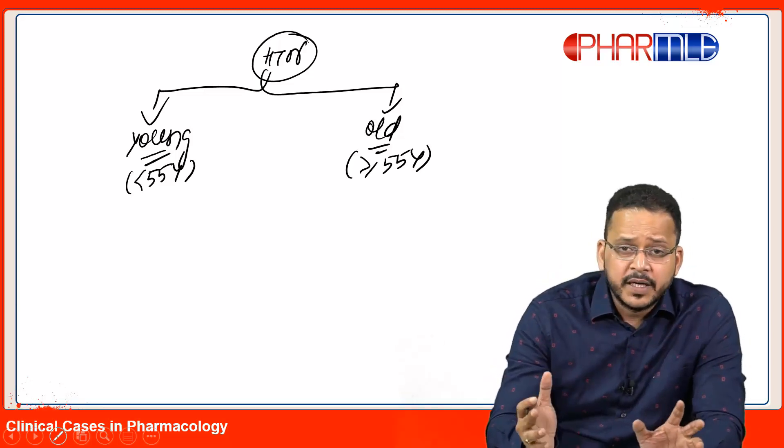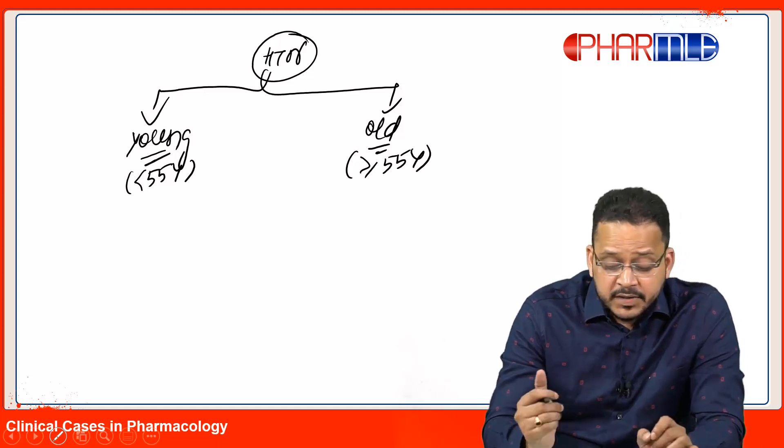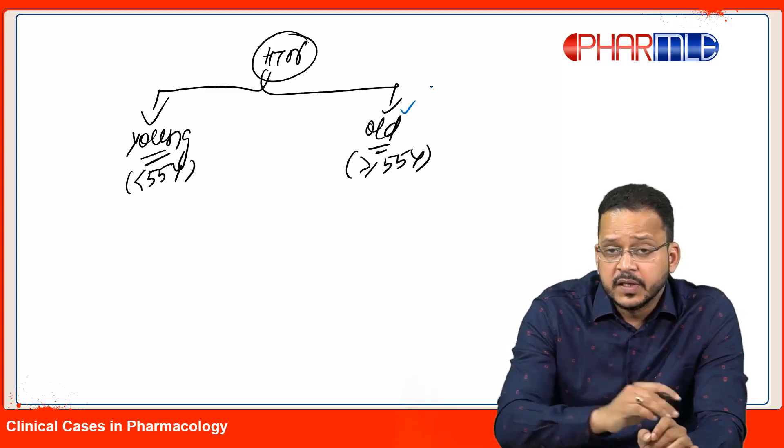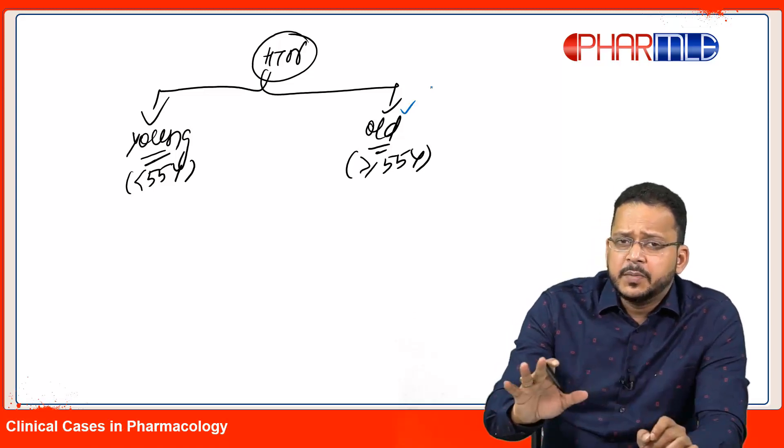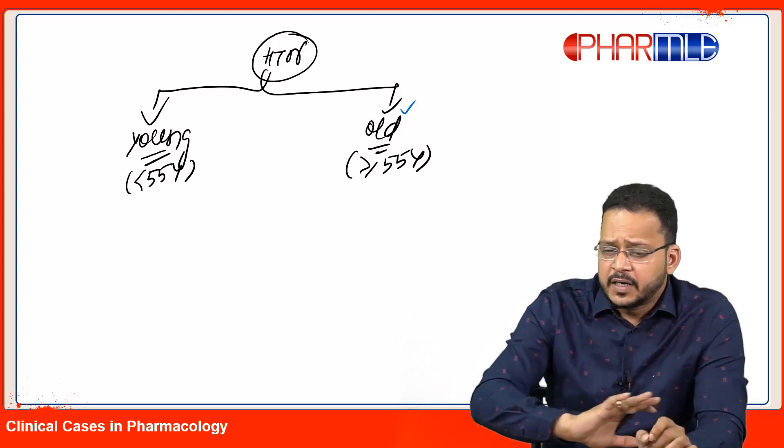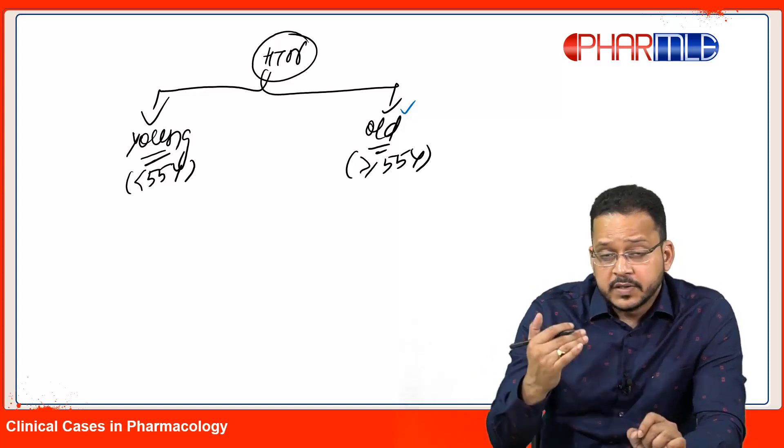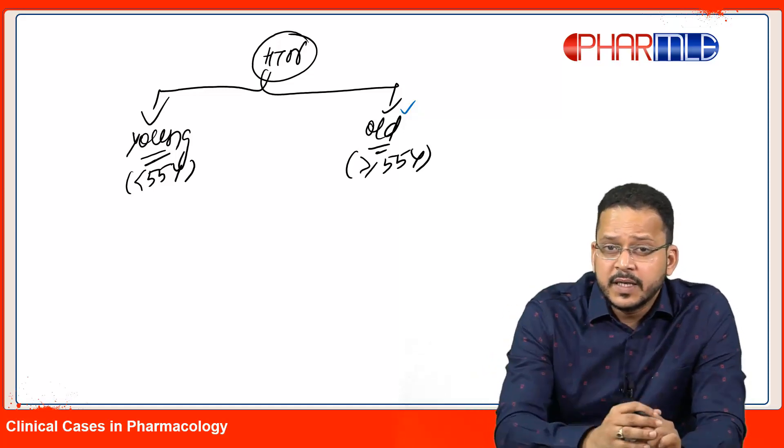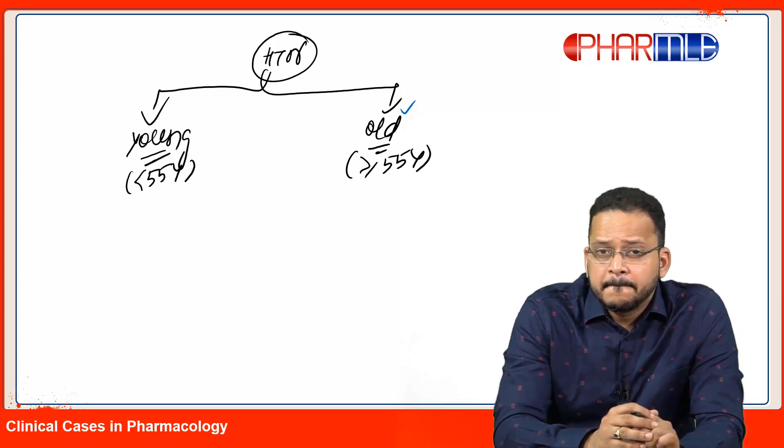So in which age group is renin high? Just imagine a patient 70 years old who never had high blood pressure throughout his entire lifetime. All of a sudden at 70 years of age he is having hypertension. What could be the reason?